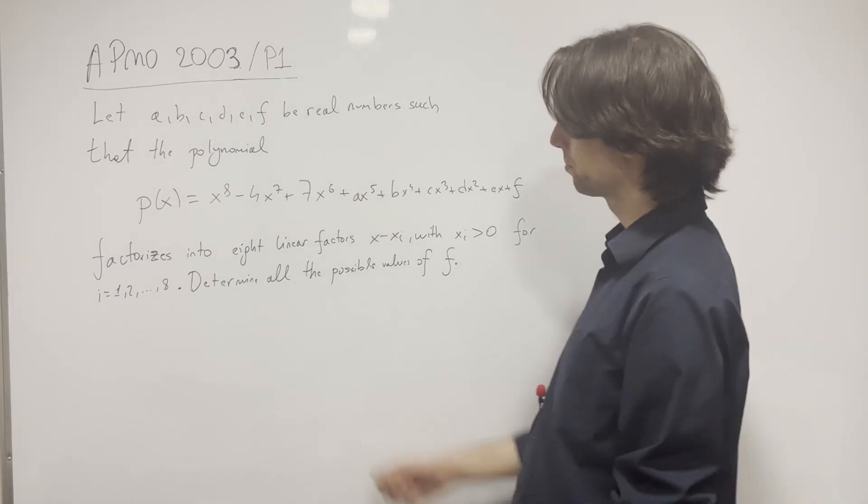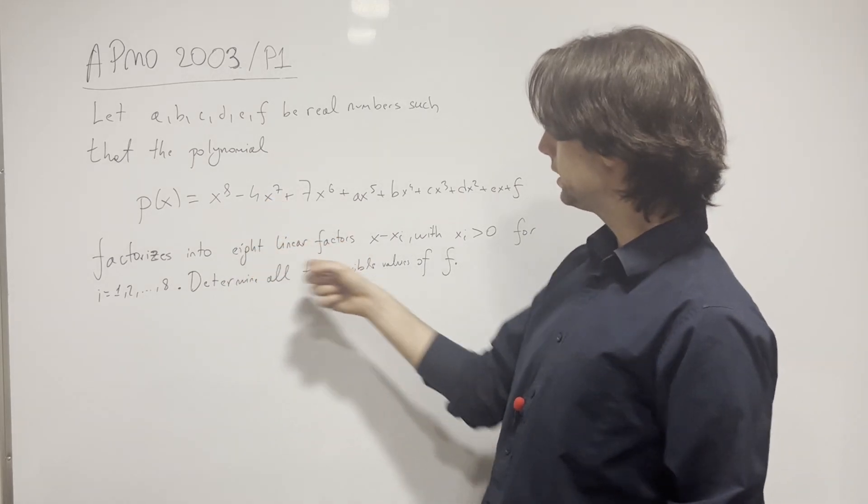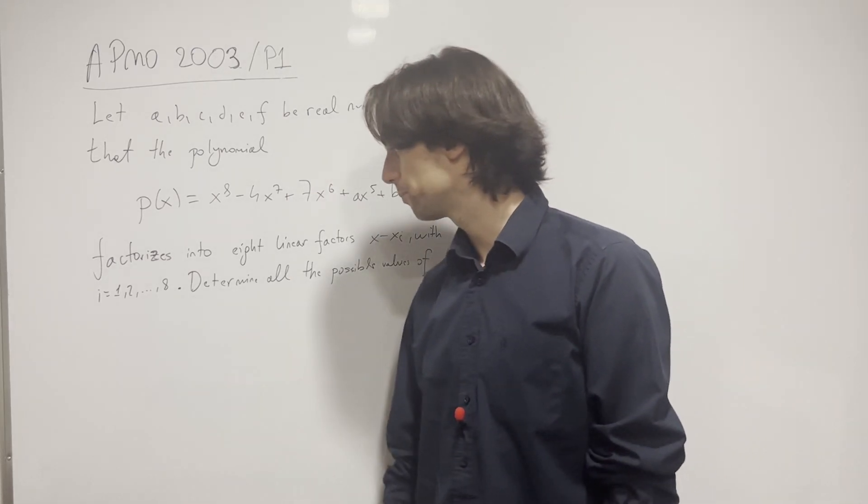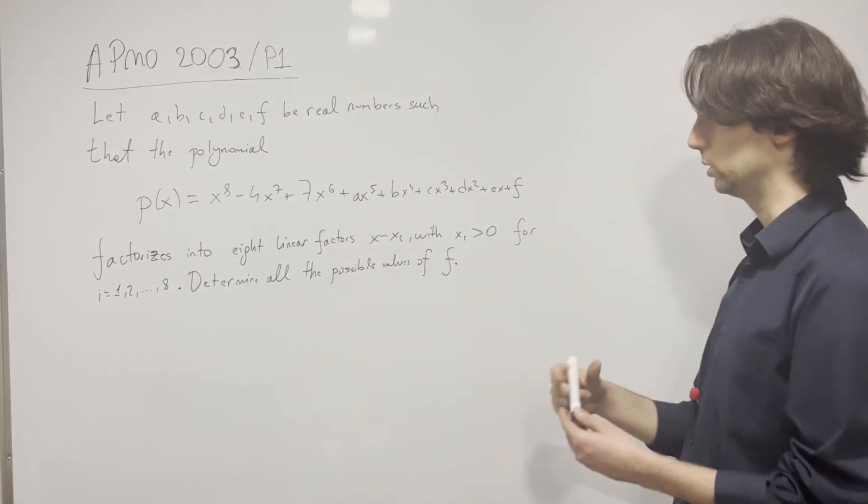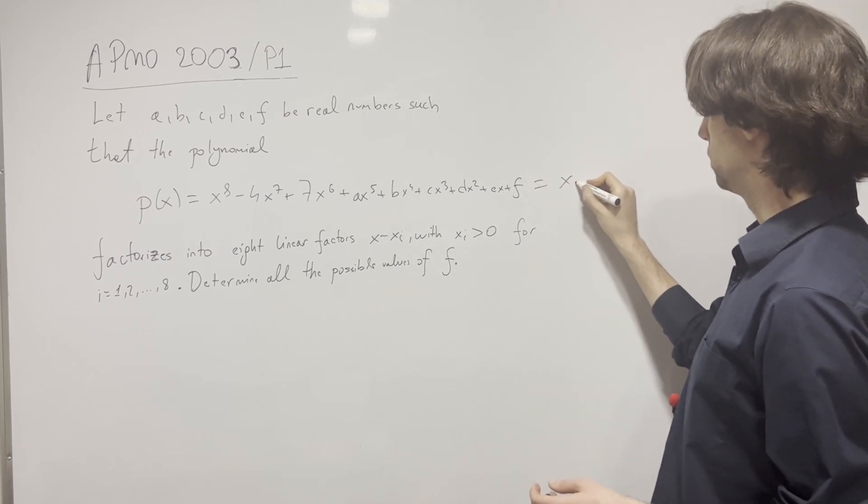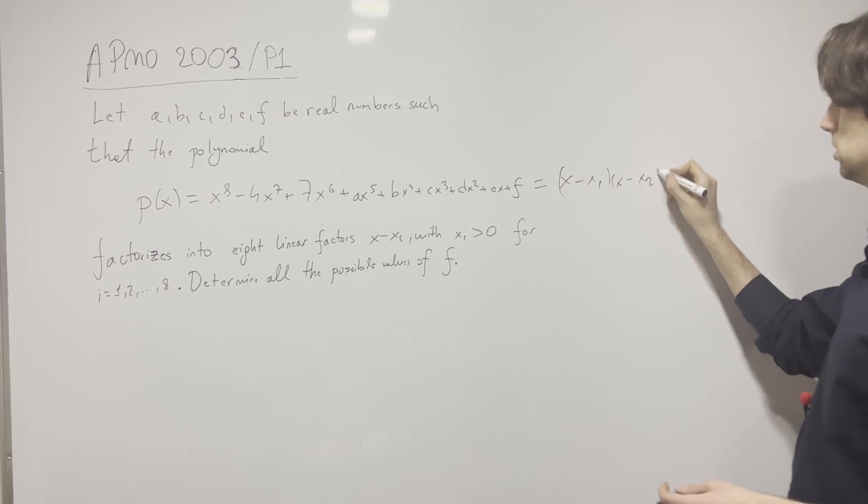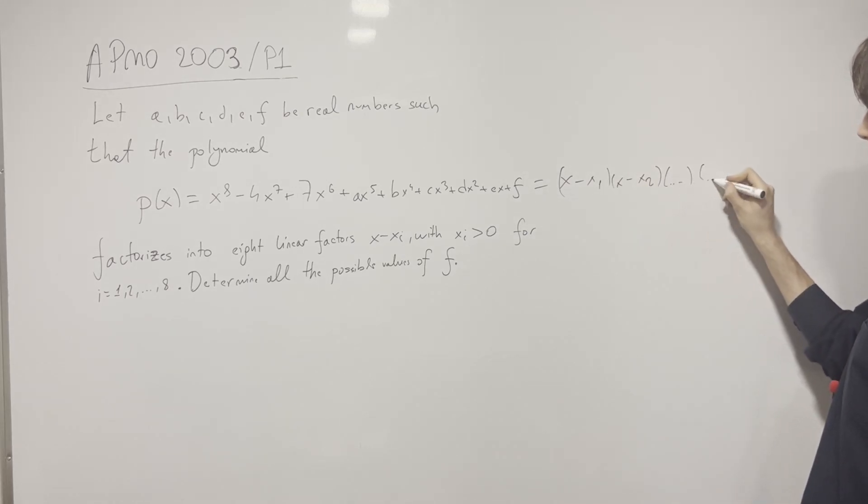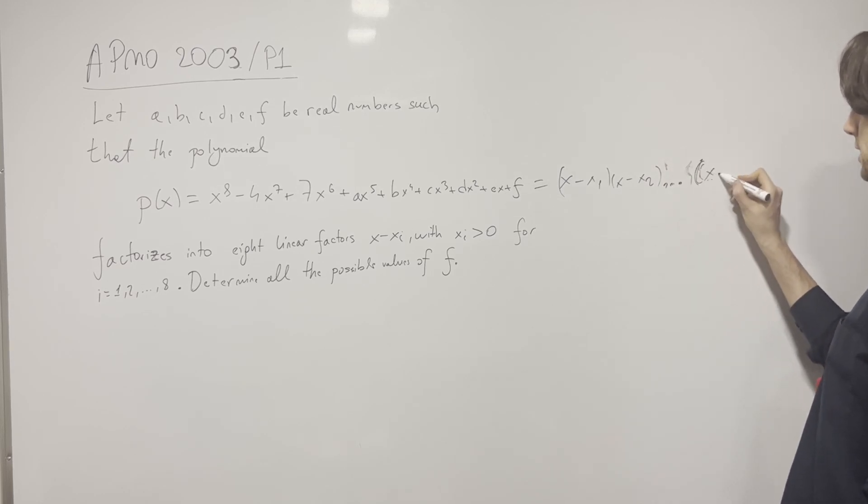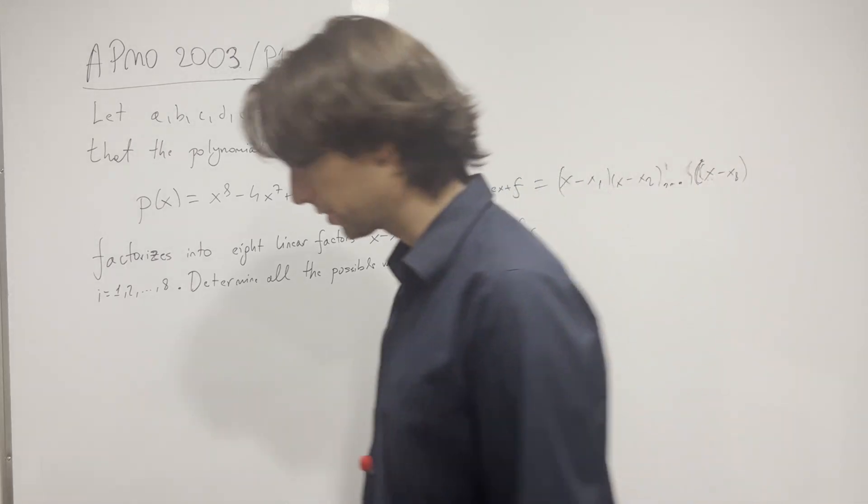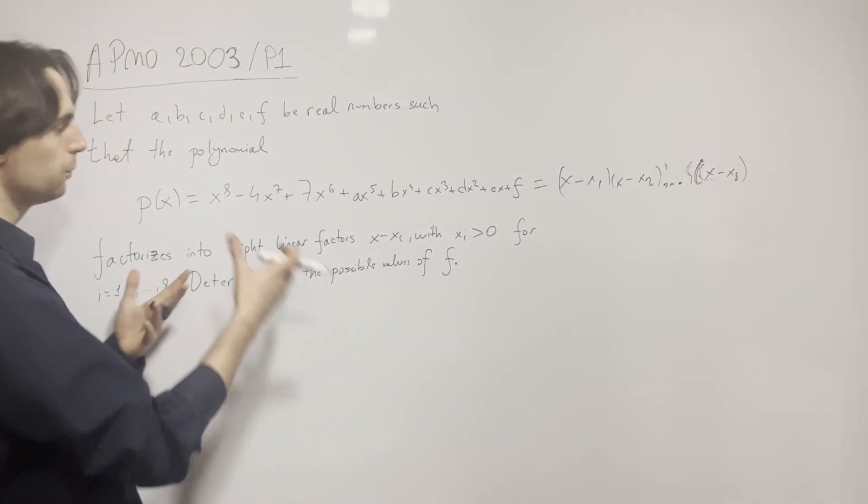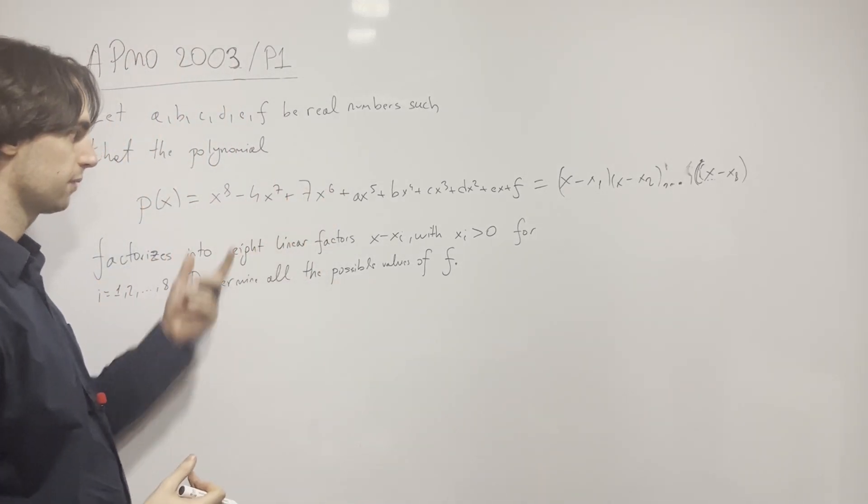So let's begin. This means that the zeros of this polynomial are going to be 8 real numbers which are all positive. So we know p(x) is also equal to x times (x - x1) times (x - x2) all the way till (x - x8). Now what does it mean? This is true for every x. So how can we combine these things together?